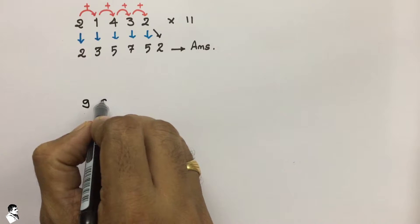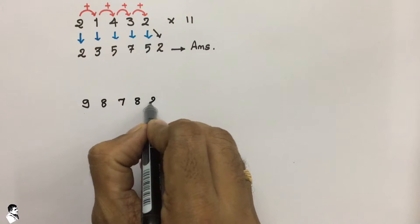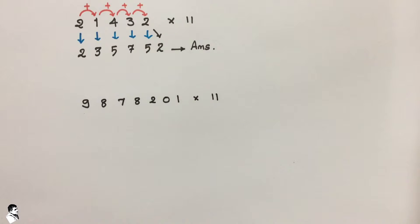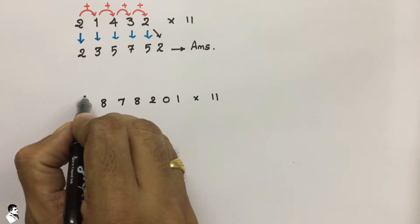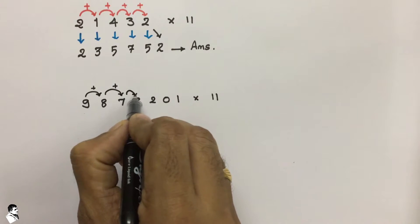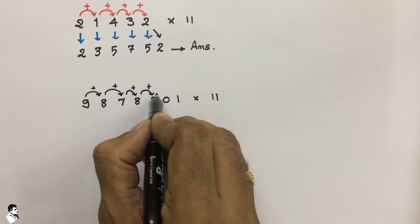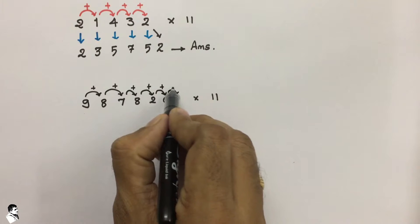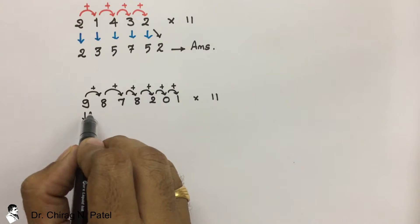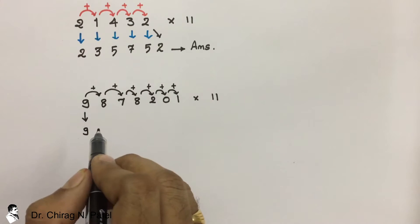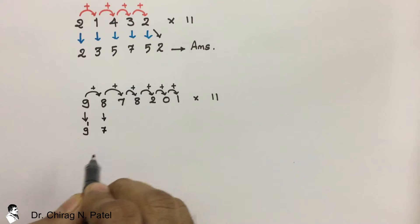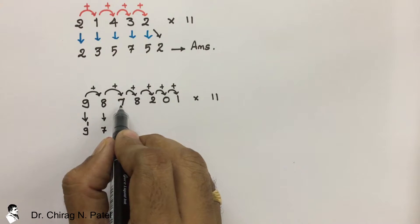Now try another one: 9878201 multiplied by 11. We again sum up each value with its next value to find the answer. First, write down the first number as it is, then sum 9 plus 8, that is 17. Write down 7 here and 1 carries over.